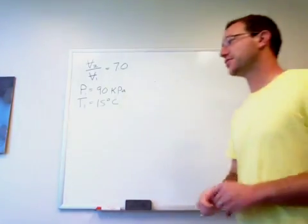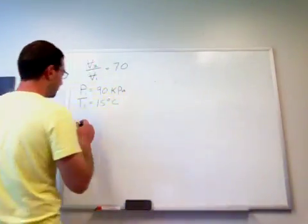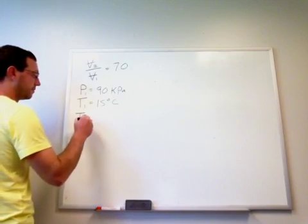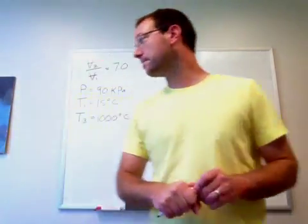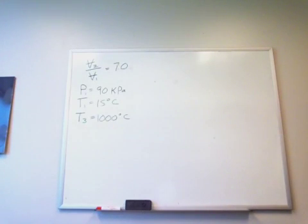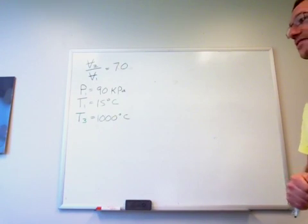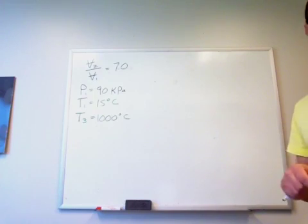Maximum cycle temperature is 1,000, so we know that will occur at time 3. Utilizing air standard assumptions, we want to know the efficiency of this cycle, doing constant and variable specific heat.